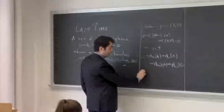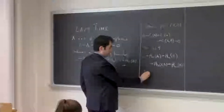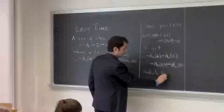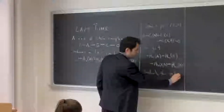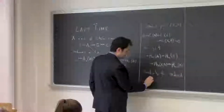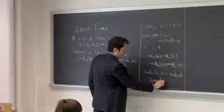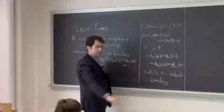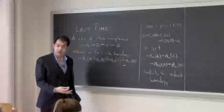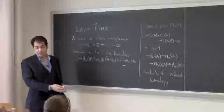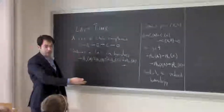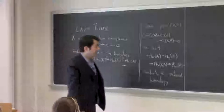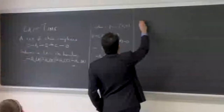Similarly for reduced homology: we have augmented chain complexes and they also form a short exact sequence, so you can also get a long exact sequence. And also for a triple.